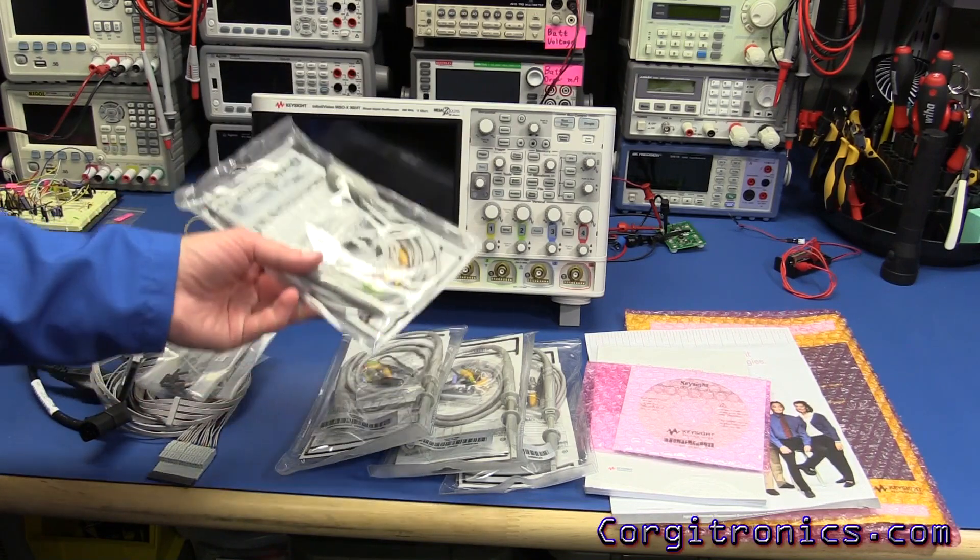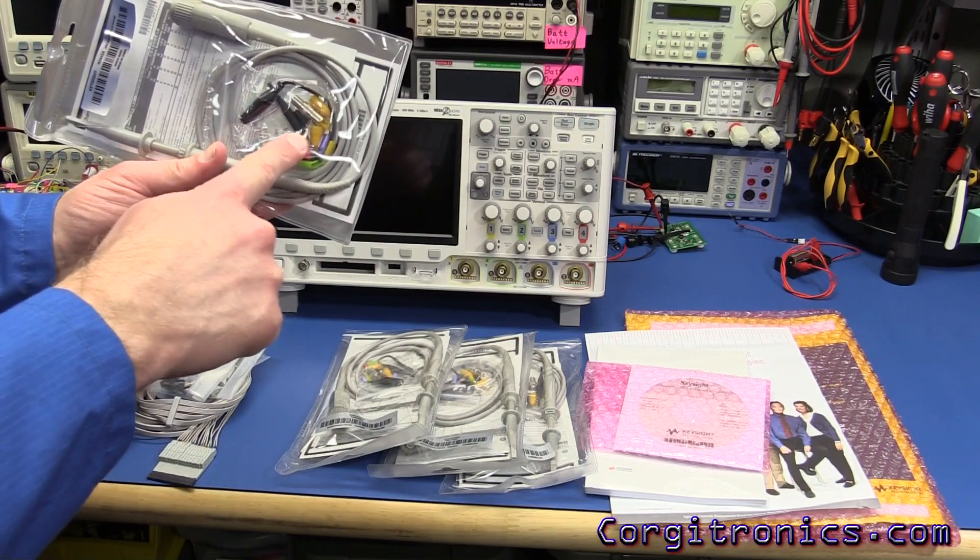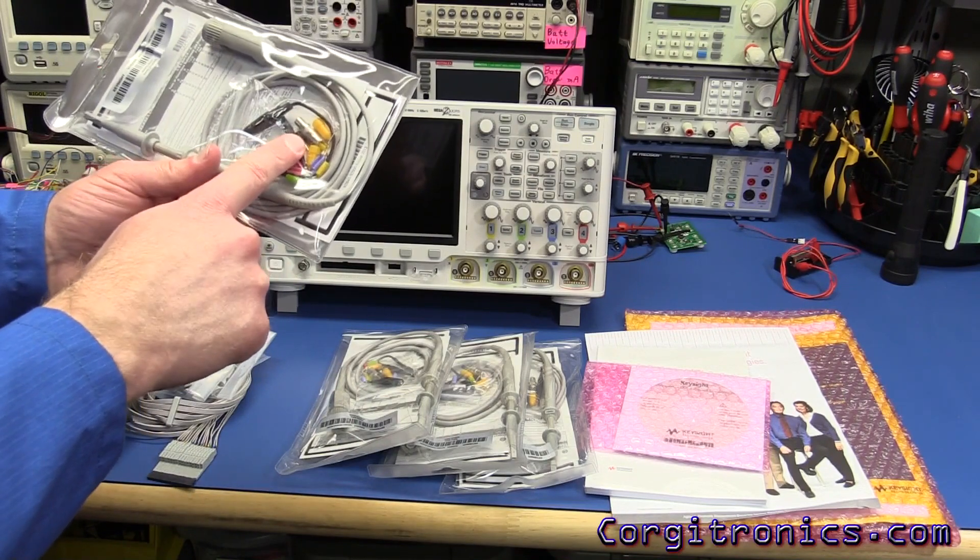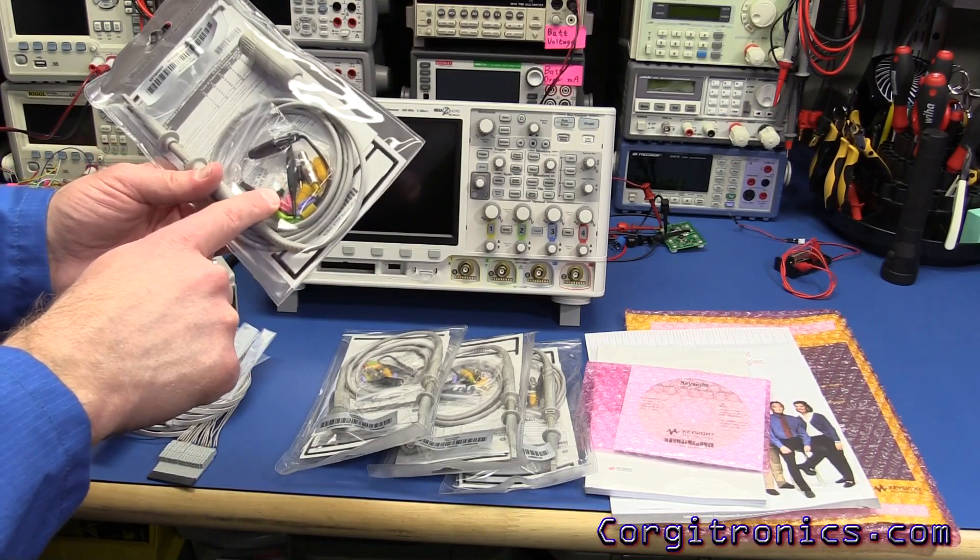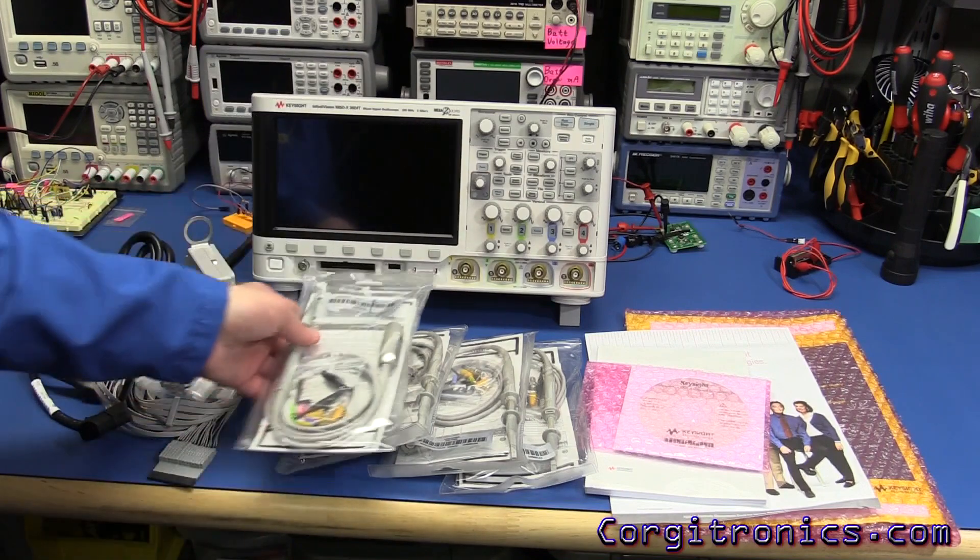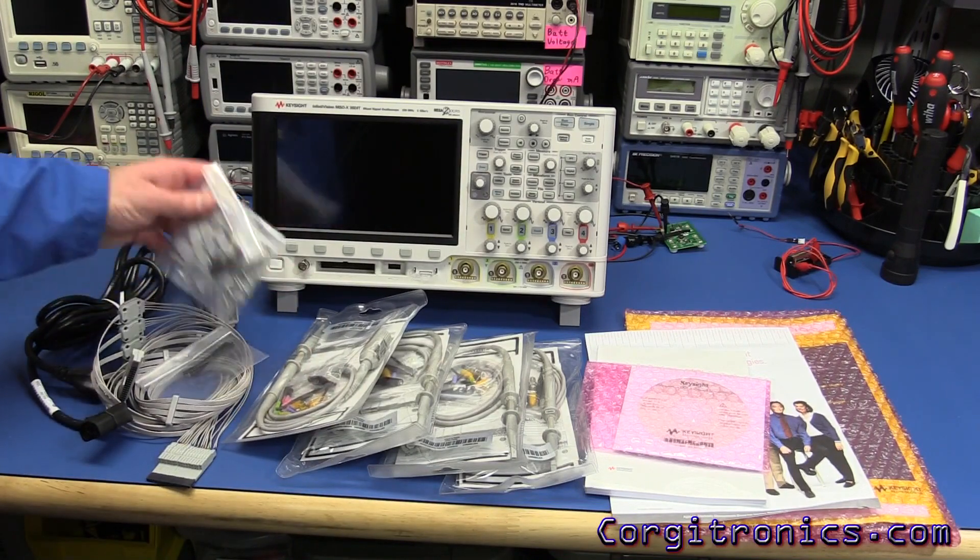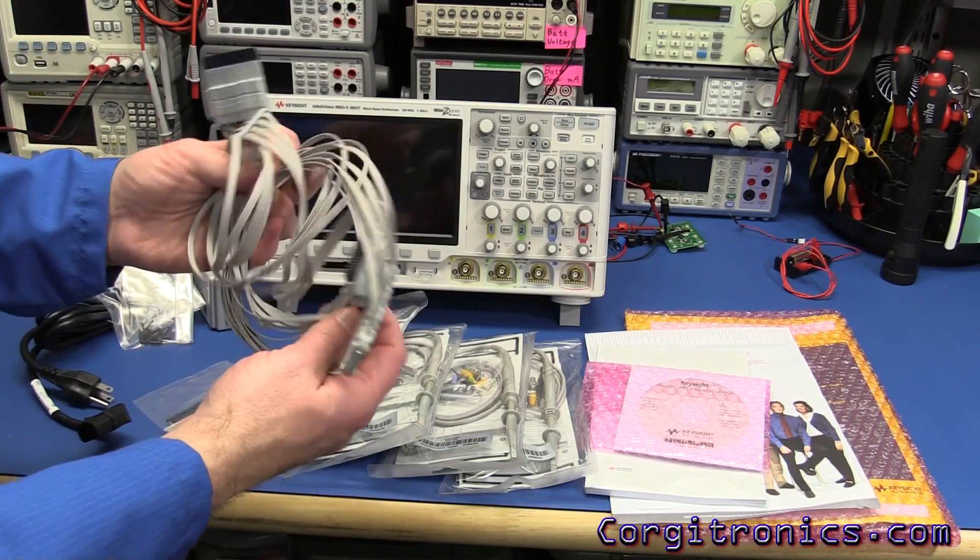They come with all of the usual and actually some of the types of extensions on here for the tips that I haven't had before. So there's a few extra ground connections and things that I didn't get with my Rigol probes. And then you get this huge tail for all your logic signals.